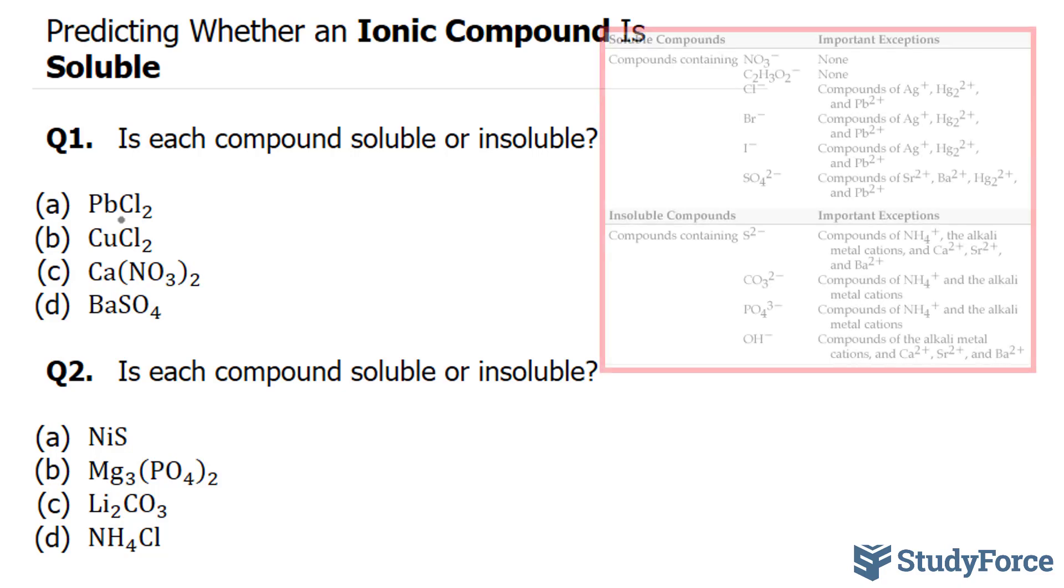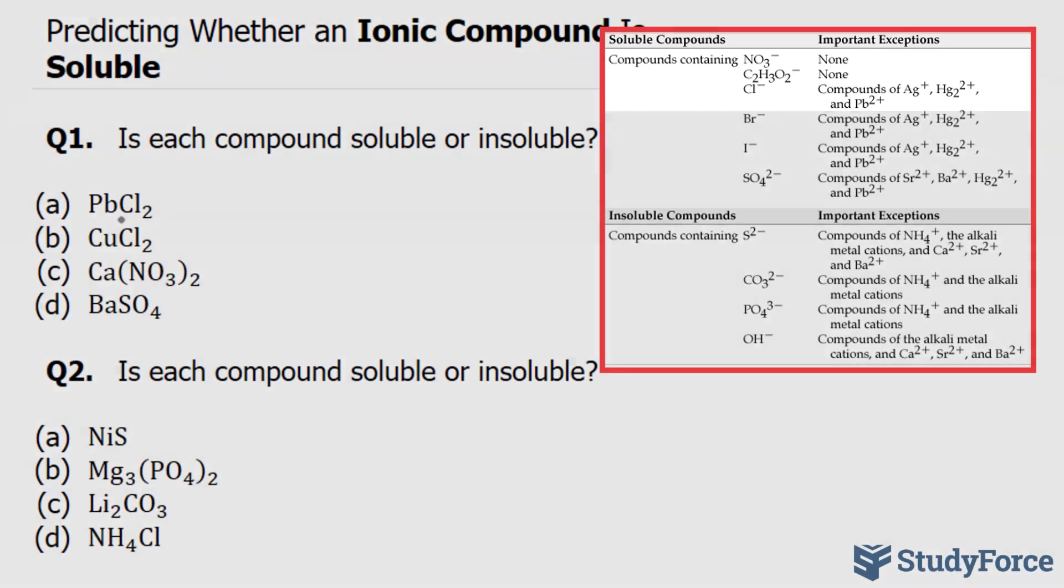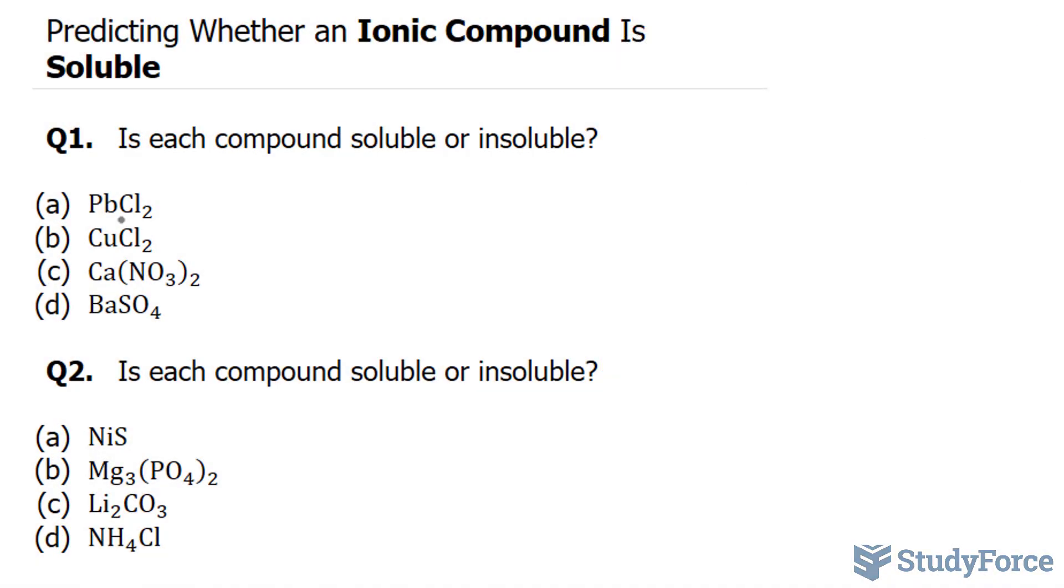Normally in an ionic compound, if it contains chlorine, it makes the compound soluble. However, if chlorine is coupled with lead, specifically lead 2+, there is an exception to this rule, making this compound insoluble.